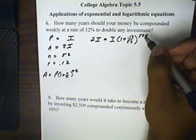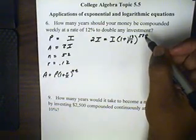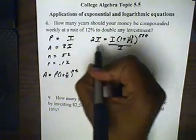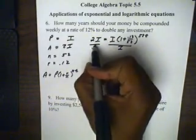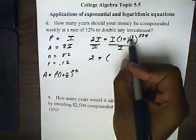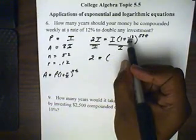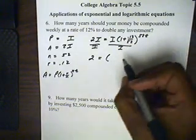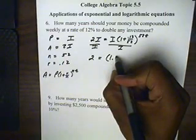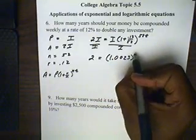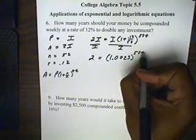Well, from here, let's divide both sides by I, and that gives us 2. And we'll also divide our 0.12 by 52. 0.12 divided by 52 will give us 1.0023 as a base, all to the 52t power.